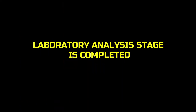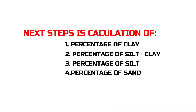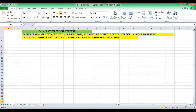Once you have completed the laboratory analysis, stage one is completed. The next stage is the calculation of soil texture based on the readings obtained from the hydrometer. We will determine the percentage of clay, the percentage of silt, and the percentage of sand. Let's use the Excel sheet to do the calculation of soil texture.